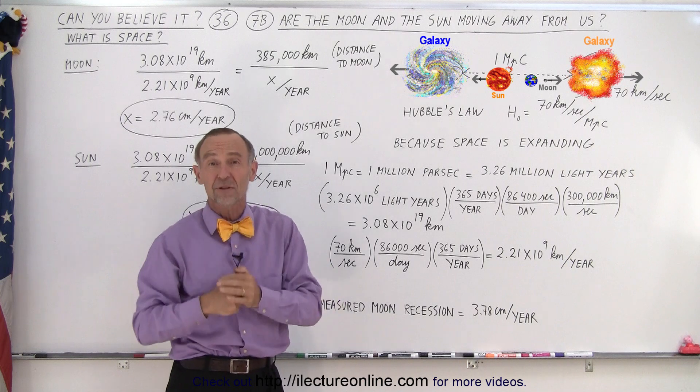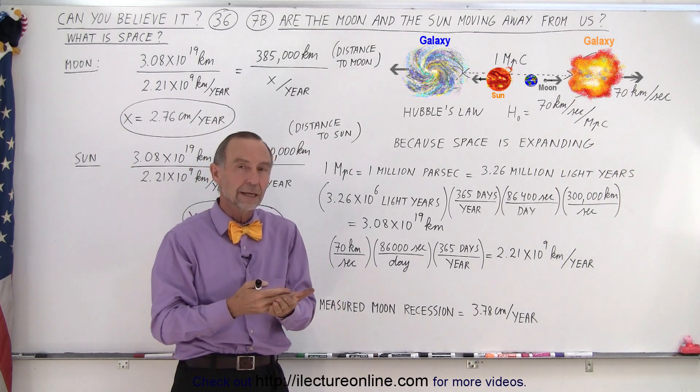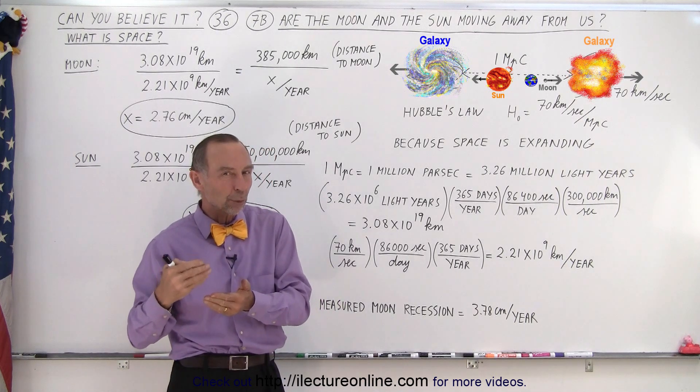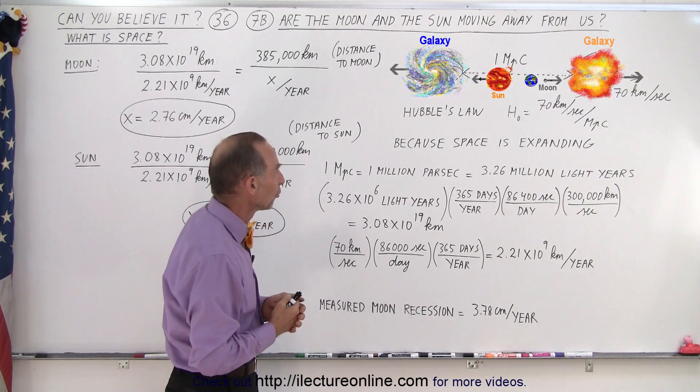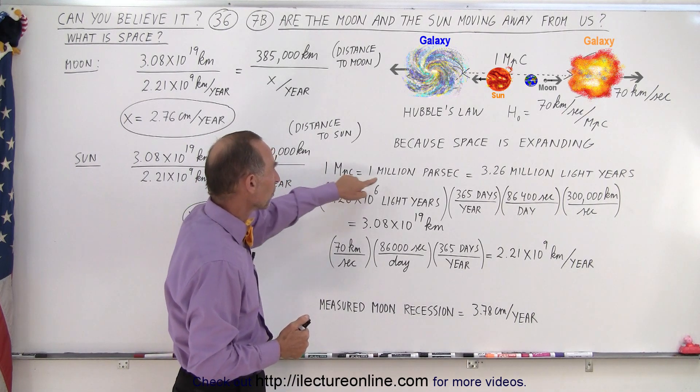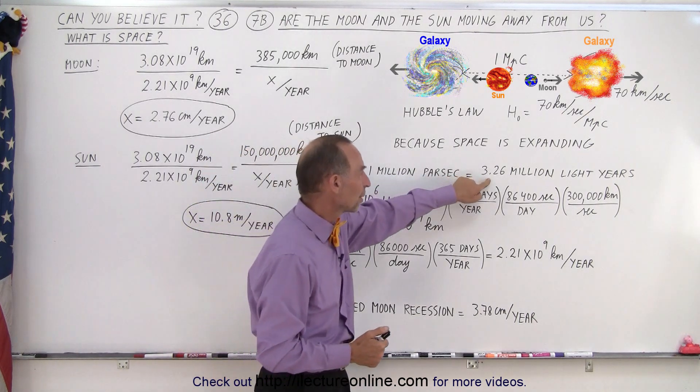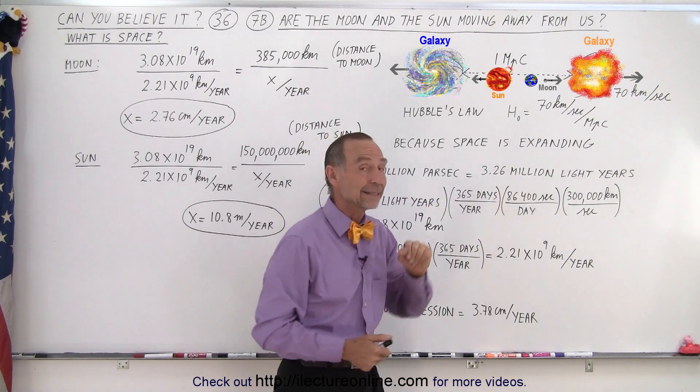Now what is a megaparsec? Well, mega means million and one parsec is 3.26 light years. So one megaparsec is a million parsec which is 3.26 million light years.